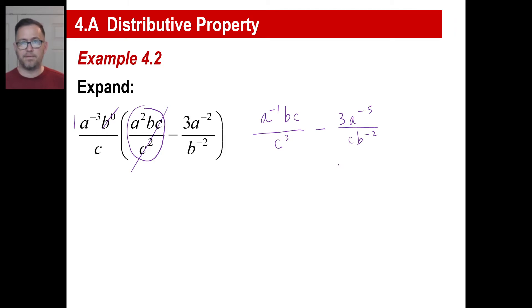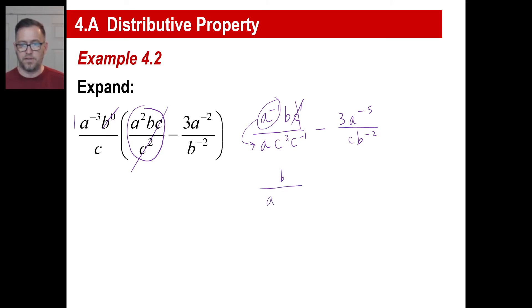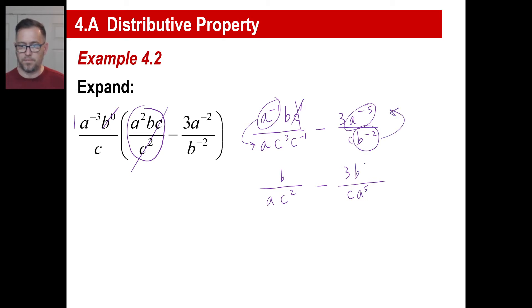Let's try making everything into a positive exponent. I'm going to move c to the 1st down here — that turns into c to the negative 1, and it's gone. I'm going to move a to the negative 1 down here, and that turns into a to the positive 1. So b stays in the numerator, a is in the denominator, and c to the 3rd times c to the negative 1 is c to the positive 2. For the second term: the a to the negative 5th moves down as a to the positive 5th, and b to the negative 2 moves upstairs and becomes b to the positive 2.